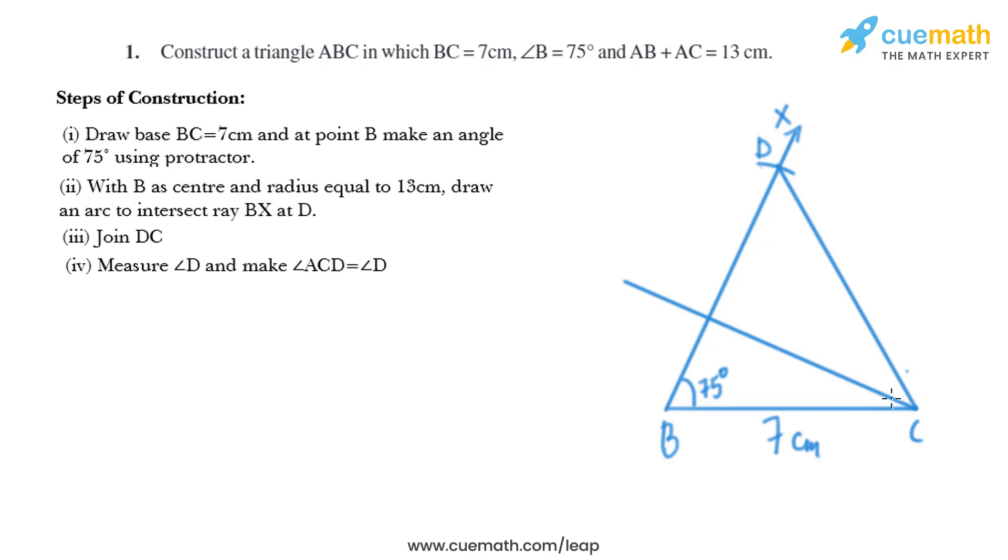This angle ACD is the same, so these two angles, the one in red angle ADC is same as angle ACD. So we have got ABC as the required triangle.